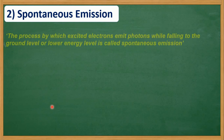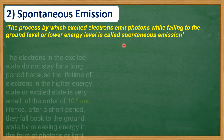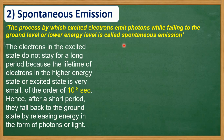Spontaneous emission: the process by which excited electrons emit photons while falling to the ground level or lower energy level is called spontaneous emission. The electrons in the excited state do not stay for a long period because the lifetime of electrons in the higher energy state or excited state is very small — on the order of 10 raised to minus 8 seconds.